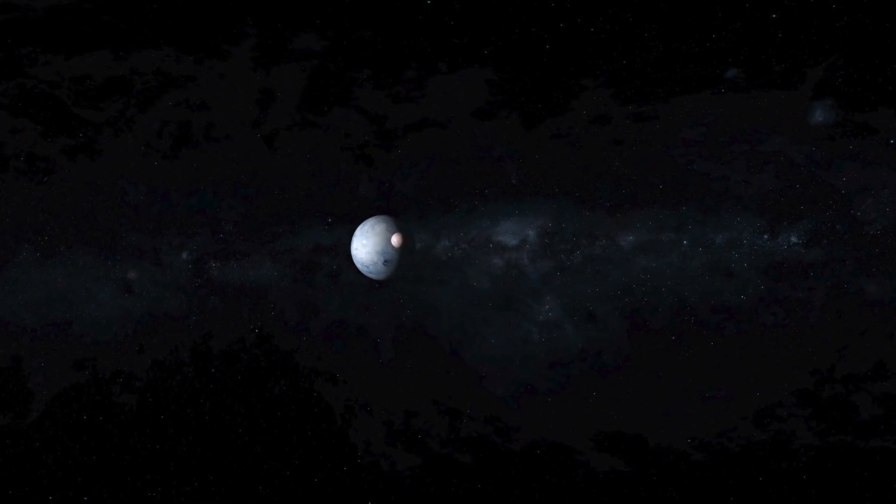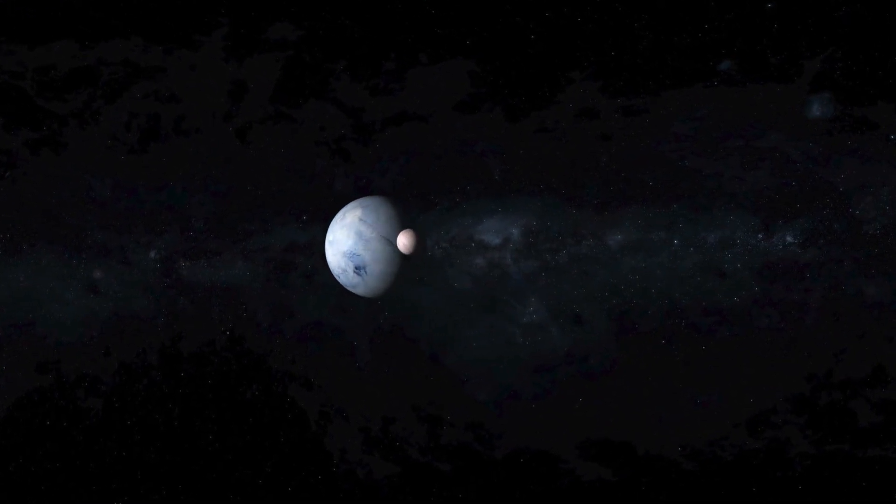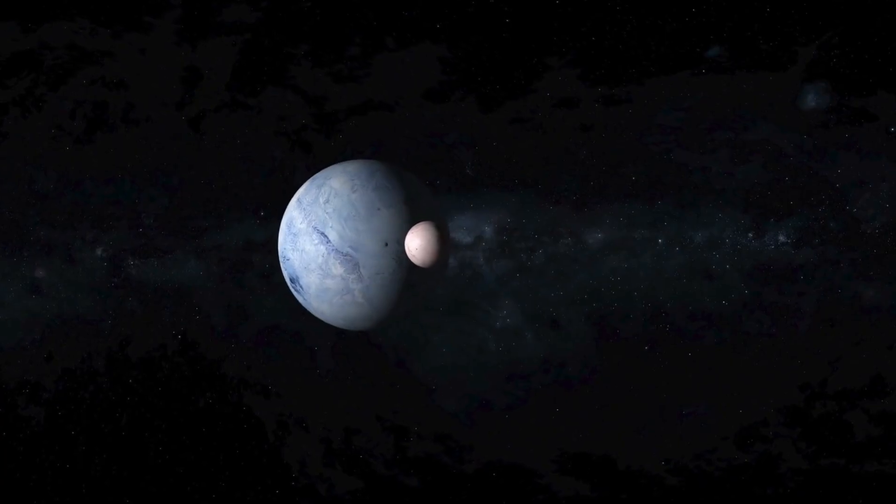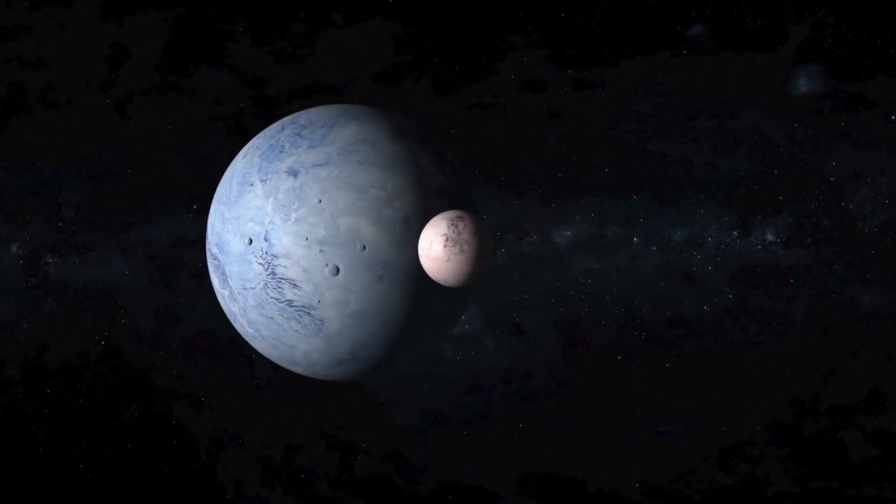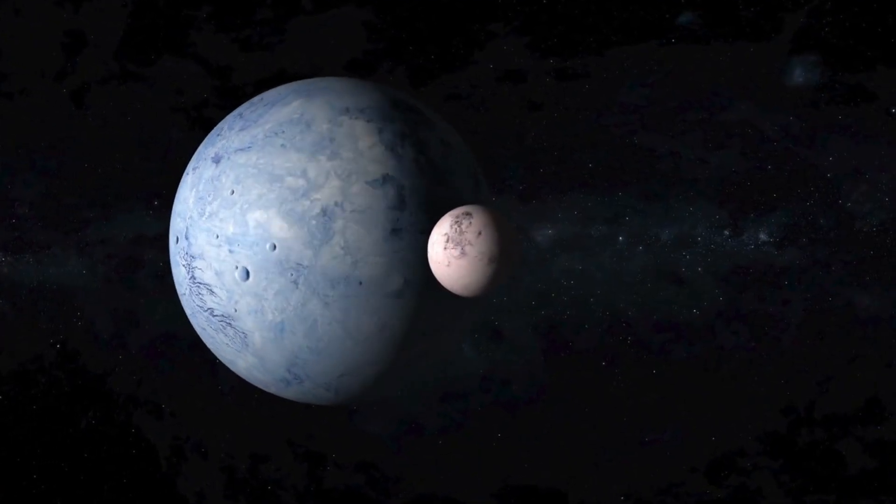Kepler-51e is believed to have a mass similar to the other planets in the system. Its orbit around the star takes about 264 days.